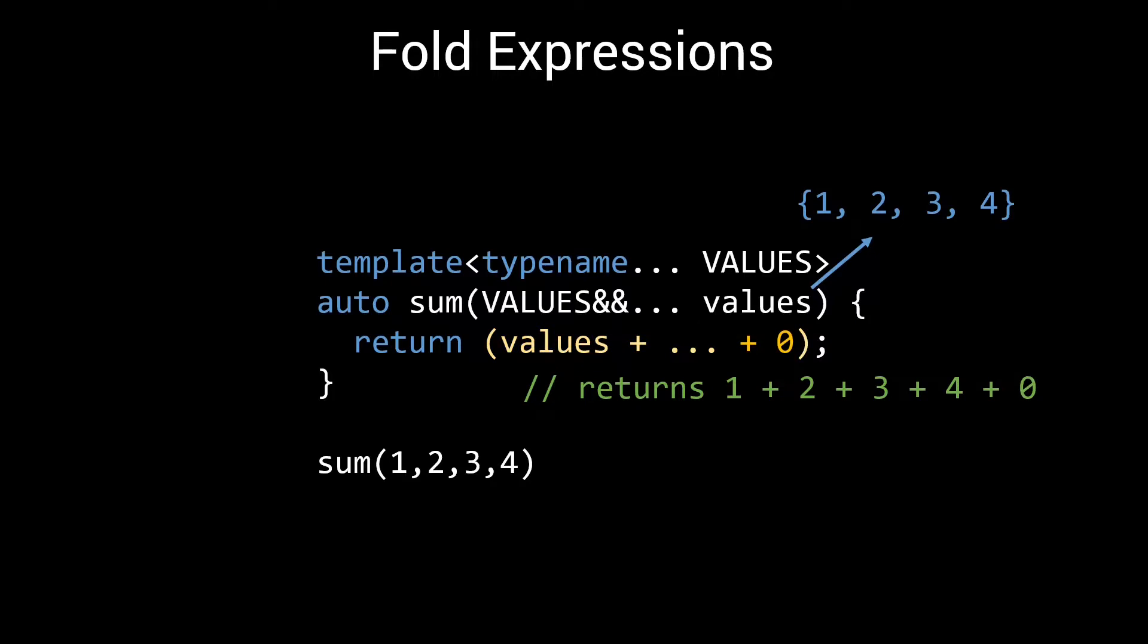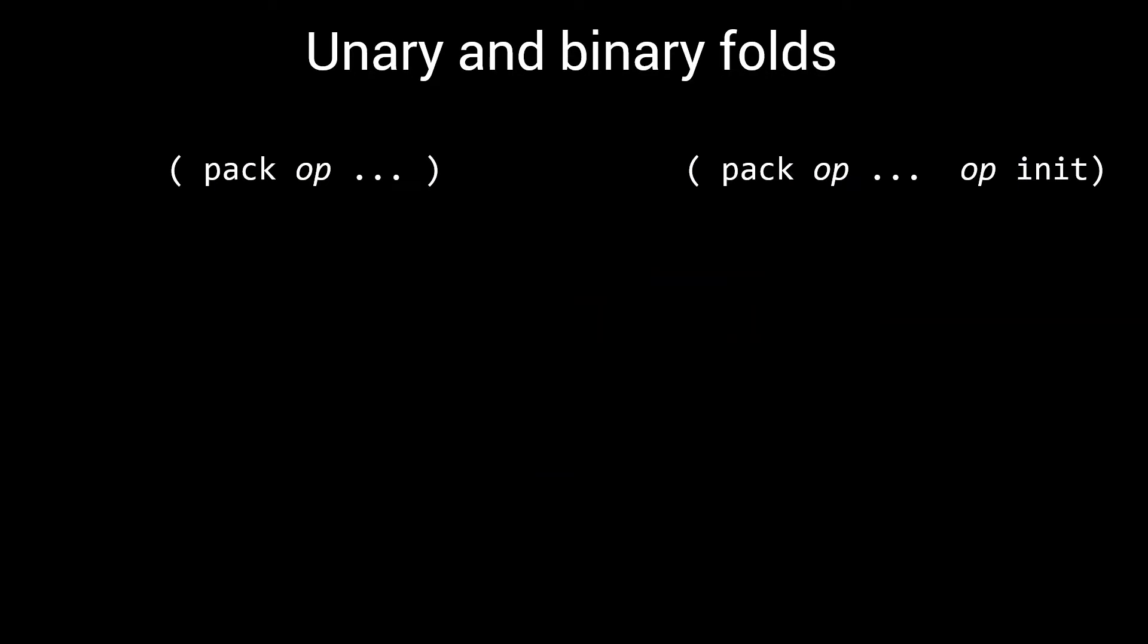Note that the ellipsis, the three dots, is in between the two occurrences of the plus operator. Now let's look into the syntax a bit more carefully. As I said, we have unary and binary folds. Both use the parenthesis and the ellipsis, the triple dot. The difference is in the number of occurrences of the operator.